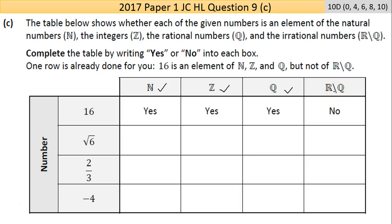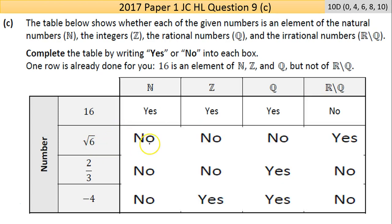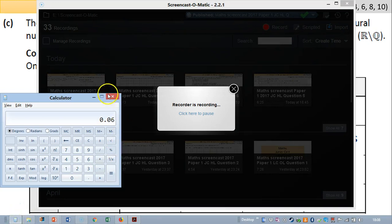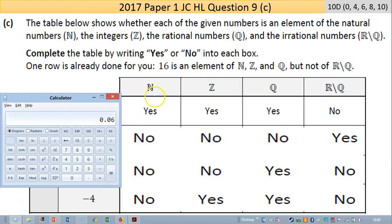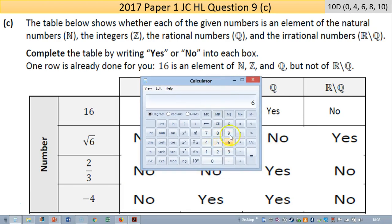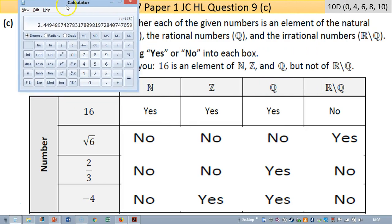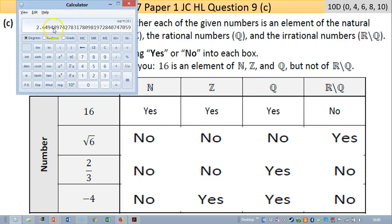Square root of 6. Let's go to the answers. It's not natural because the square root of 6, if I use the calculator, is 2.44... That's not a whole number. Is it an integer? No, because it's not a positive or negative whole number - it's a decimal between 2 and 3.